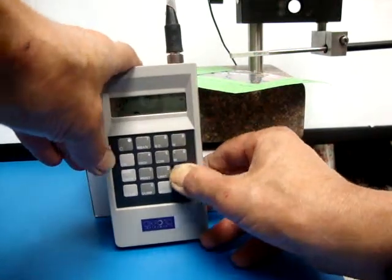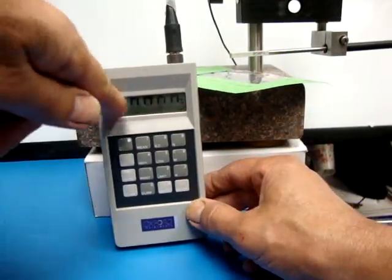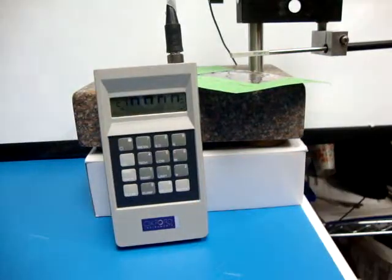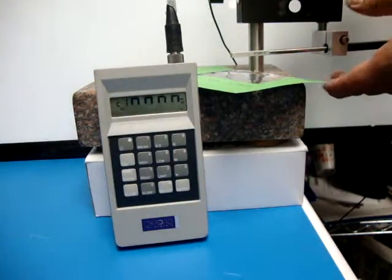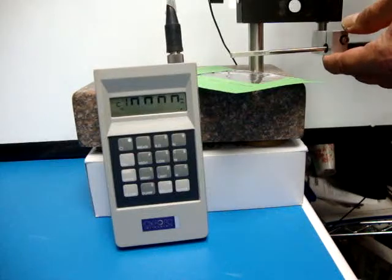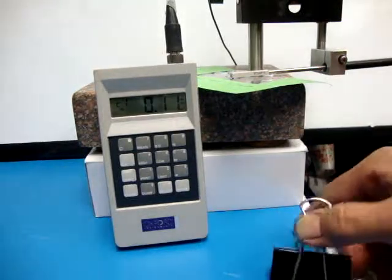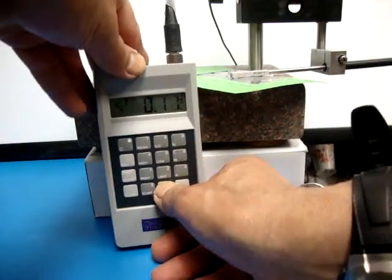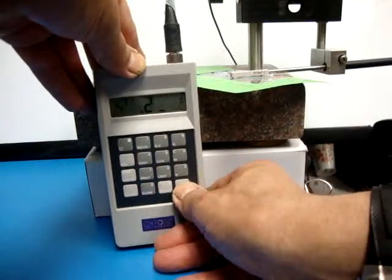So now we hit star CAL. And now it's looking for the first calibration shim, C1. So I'll place it down on the base, and I'll enter the value of the shim, which is 0.2. Enter.